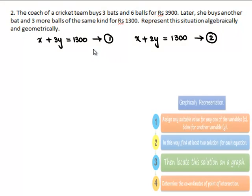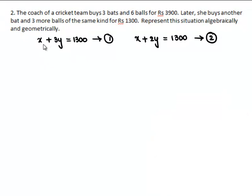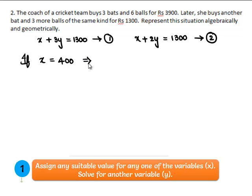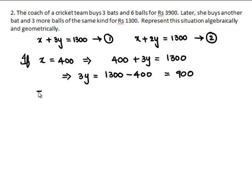In order to represent these two equations graphically, let us find two solutions for each equation. For the first equation, X + 3Y = 1300: if X = 400, then 400 + 3Y = 1300, so 3Y = 900, giving Y = 300.